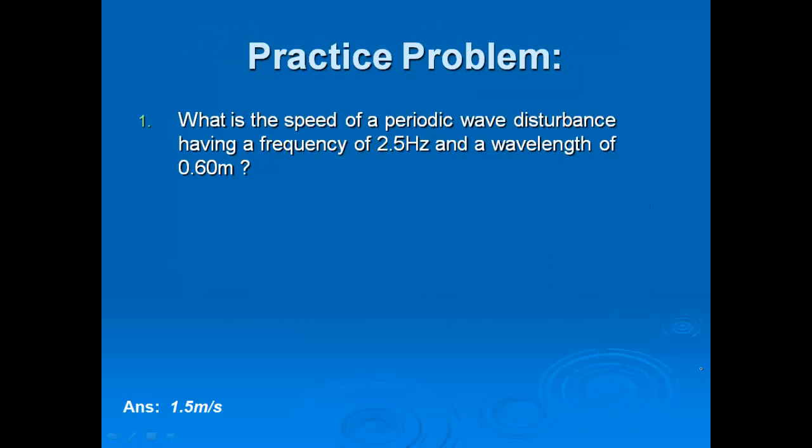Let's try a problem. Here we have the speed of a periodic wave disturbance. We have a frequency of 2.5 hertz and a wavelength of 0.6 meters, and they want the speed, velocity. That is going to be wavelength times frequency. So 2.5 times 0.6 is 1.5 meters per second.